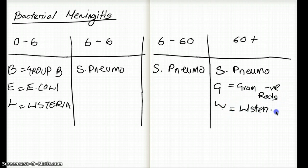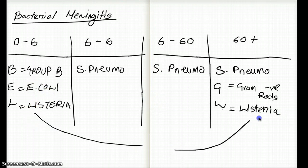This Listeria comes back from 0 to 6 all the way to 60 again. We're going to see it again after 60 years in elderly patients for Listeria. And G is gram-negative rods.